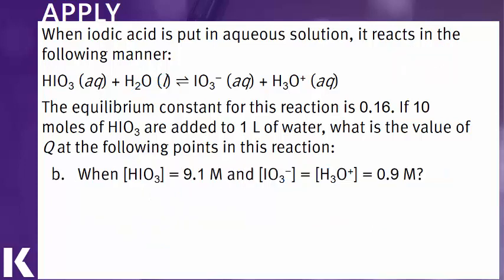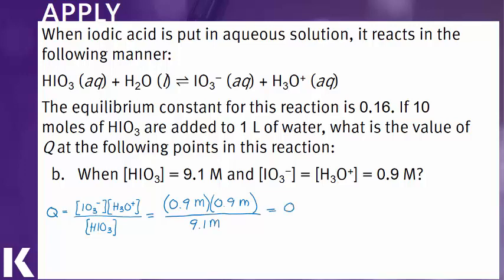Now, let's take a look later in the reaction. We have the same Q expression that we had written earlier, and now we have some concentrations to plug in. So we can put in 0.9 molar for IO3-. We can put in 0.9 molar for H3O+. Then we know the concentration of HIO3 is 9.1 molar. And when we do that division, we would get 0.09. This makes sense because as we produce more product, our value for Q should be getting larger.